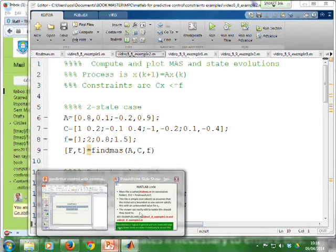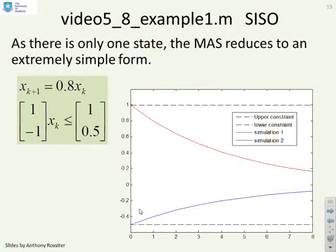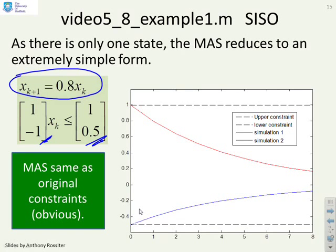So Example 1, a simple one-state transition matrix. There it is, xk plus 1 equals 0.8 xk. And there's the constraints to be applied at each sample. Now for this one, if you find the MAS, what you'll find is the MAS is actually the same as the initial constraints. So you only need n equals 1 for this case.